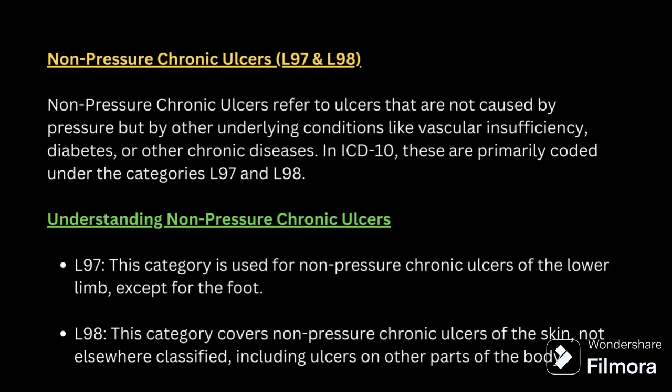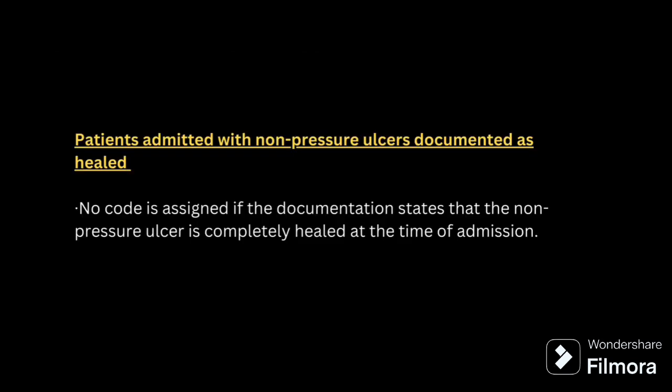Next comes non-pressure chronic ulcer. Non-pressure chronic ulcer refers to ulcers that are not caused by pressure but by underlying disease conditions like vascular insufficiency, diabetes, or other chronic diseases. It is not happening because of pressure; it is happening because of another disease condition. For these, we have L97 and L98 codes. The same guidelines apply: if it is documented as healed, no need to code. Normal pressure ulcer is L89, whereas non-pressure chronic ulcer is L97 and L98.